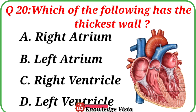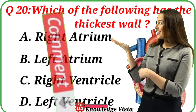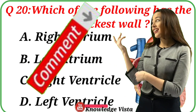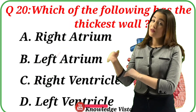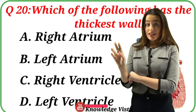Question No. 20. Which of the following has the thickest wall? Your options are: A. Right atrium, B. Left atrium, C. Right ventricle, D. Left ventricle. Write the correct answer in the comment box.